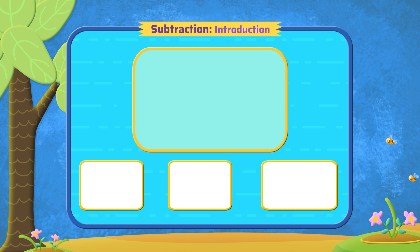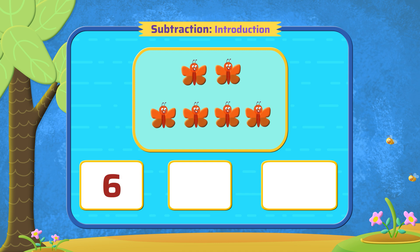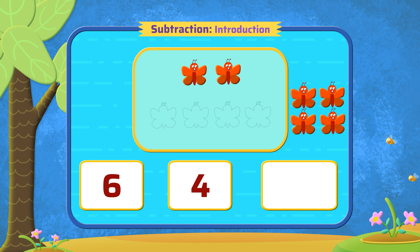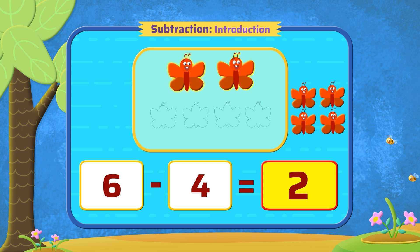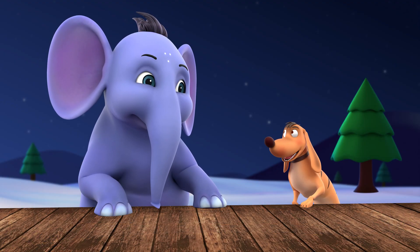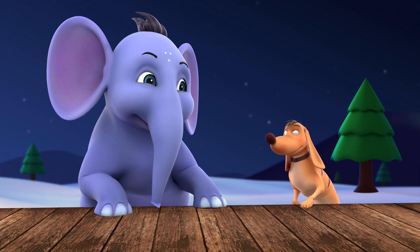Let's look at another example. There are six butterflies and four fly away, so how many butterflies are left? Let's use subtraction. Out of the six butterflies, four fly away, leaving behind two. The answer is two. Yes, you got it! Subtraction is taking away — you are a quick learner!